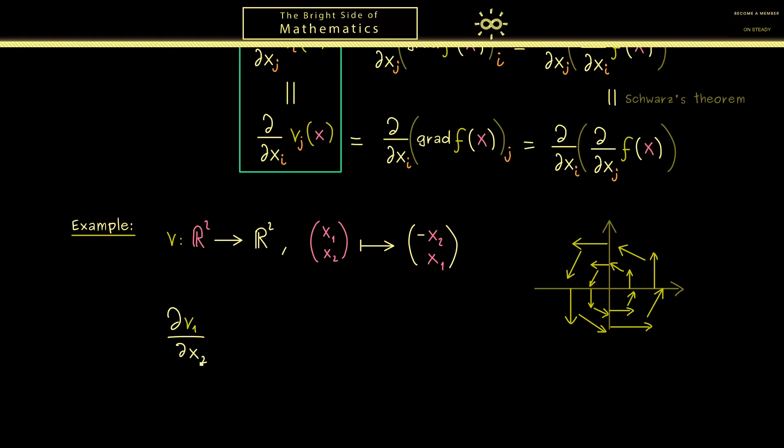So this is not complicated at all—we immediately see this is minus one. And on the other hand, we can calculate dV_2/dx_1. Also here, we can see the derivative is not complicated, it's equal to one. Hence, you see the interesting point here is the derivatives don't coincide, so here it's not equal.